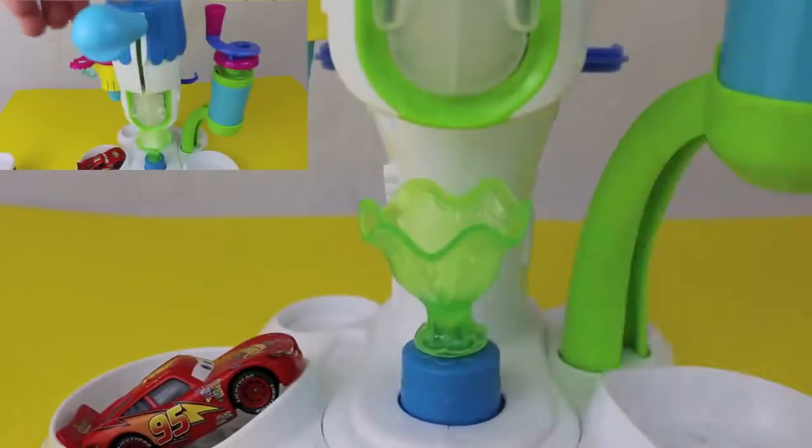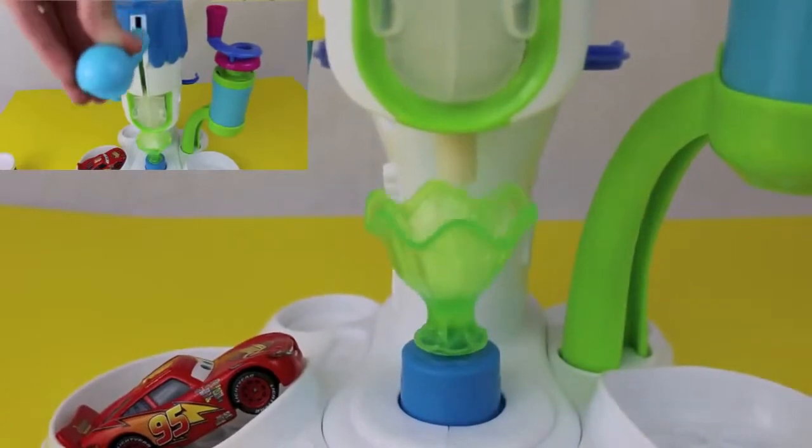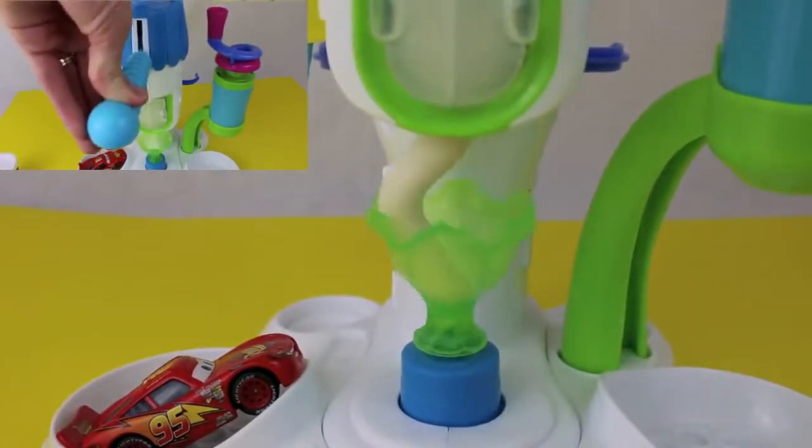To dispense the Play-Doh Plus ice cream, just press the blue lever down at the top of the ice cream maker.